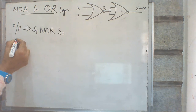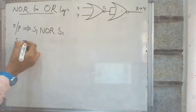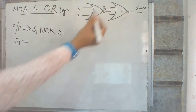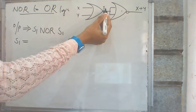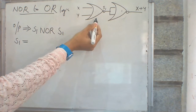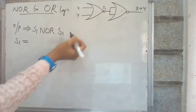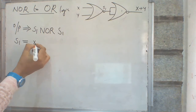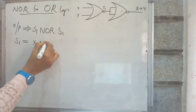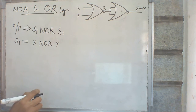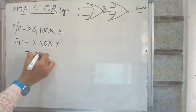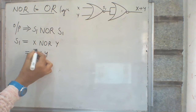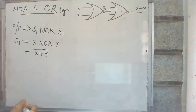The next step is to find the value of S1. S1 is the output of the first NOR gate, whose inputs are X and Y. What is the output of a NOR gate if the inputs are X and Y? NOR gate means OR gate with a bar: X plus Y the whole bar.